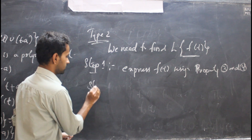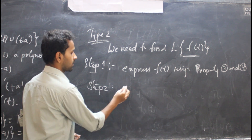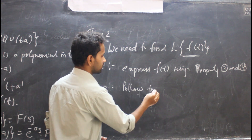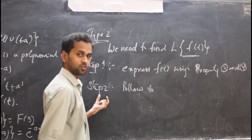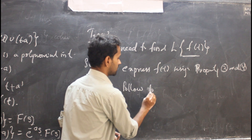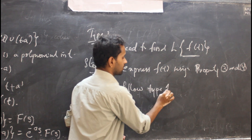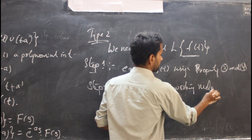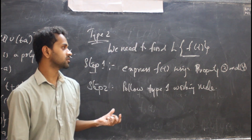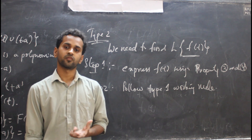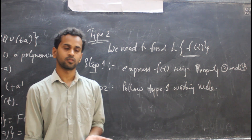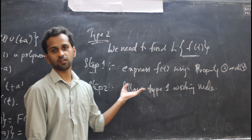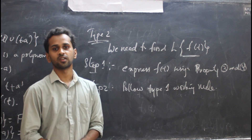Step 2: once we express the given function f(t) using properties 3 and 4, follow the Type 1 working rule to solve the problem. After expressing the function, go back and solve using Type 1 as usual.